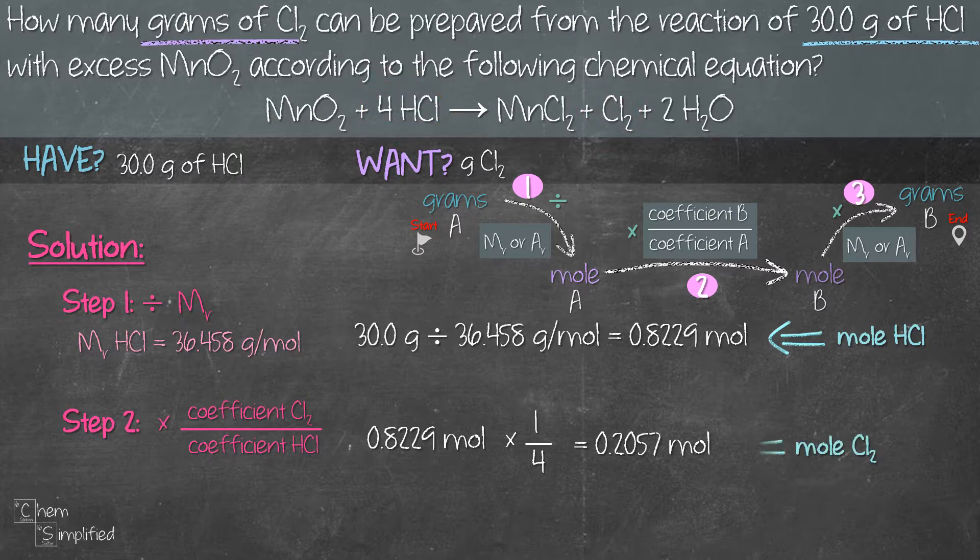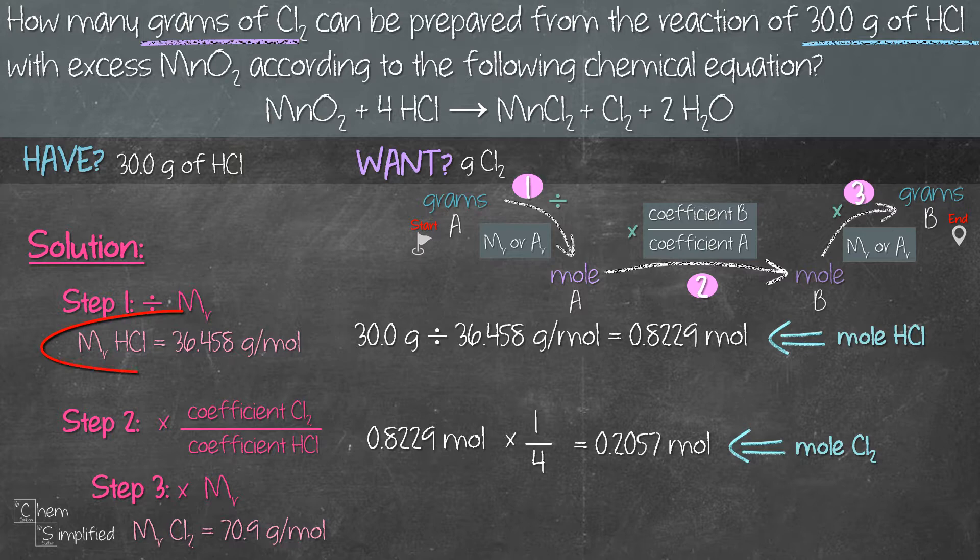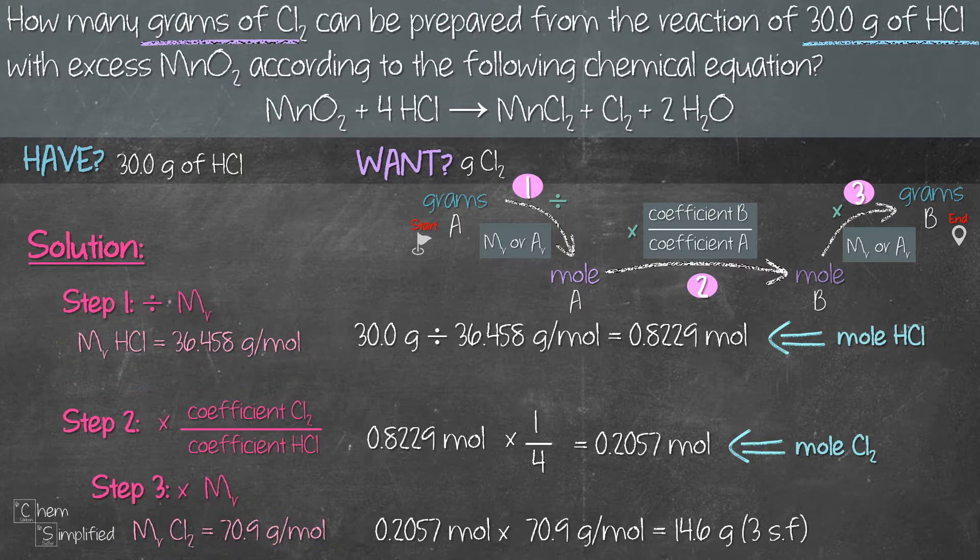That's the mole of Cl2. In the third and final step, we're going to need to multiply what we got from step 2 with the molar mass of B, which in this case is 70.9 grams per mole for Cl2. Notice that when we calculated the molar mass in step 1, that was for HCl, and for step 3, that's the molar mass for Cl2. So we take 0.2057 and multiply with 70.9 and that gives us 14.6 grams.